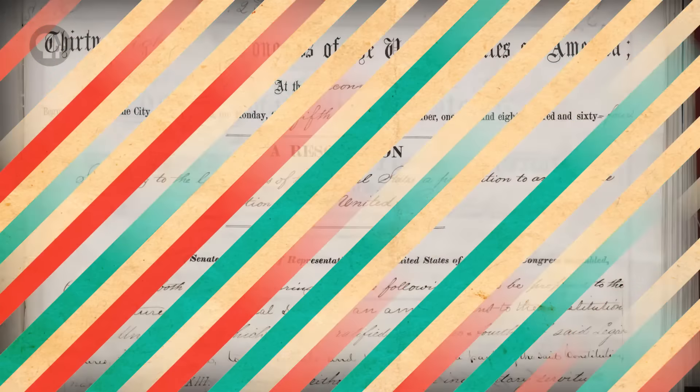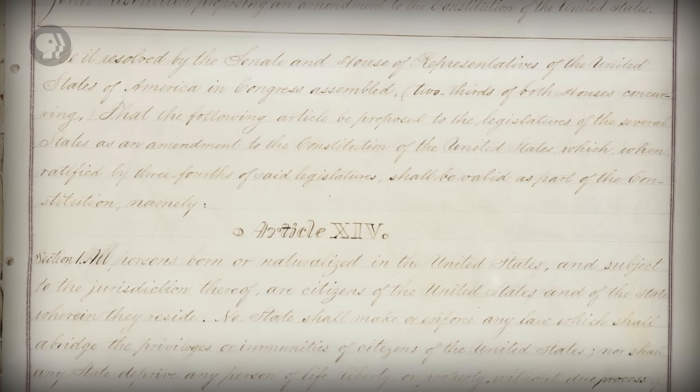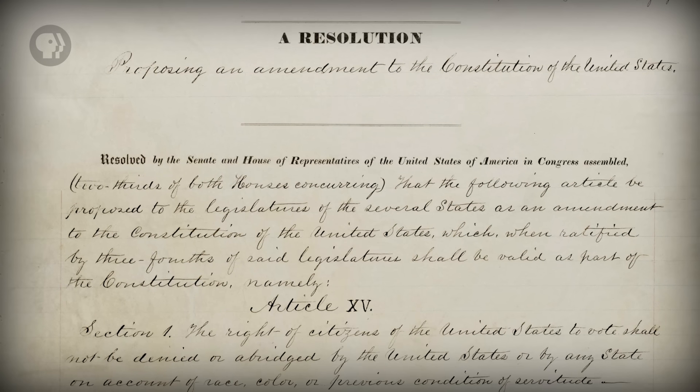You might think that since the judiciary is the third and presumably least important branch, Congress would have fewer checks on it — but that would be wrong. Congress can impeach and remove judges as it can do with the president. The Senate can reject judicial nominees before they even get there. Congress can change the federal court system by adding or taking away courts, and it can change the jurisdiction of federal courts. Congress can pass new laws that override Supreme Court decisions, as long as the decisions aren't based on the Constitution. And as a very last, super drastic resort, Congress can propose amendments to the Constitution, as it did with the 13th, 14th, and 15th amendments overruling the Dred Scott decision.